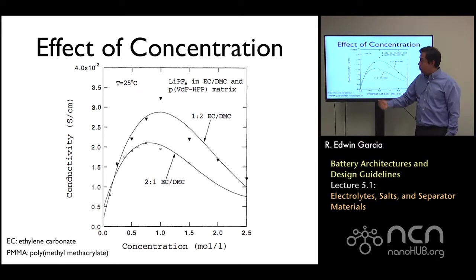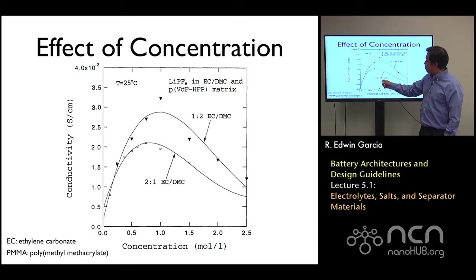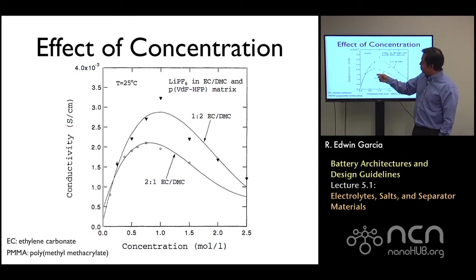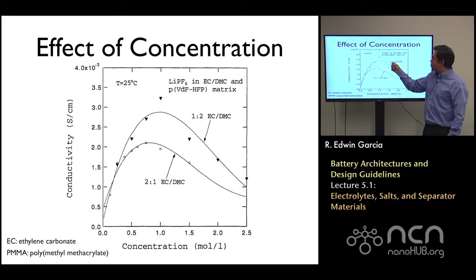Of course, what mixture ratio you use of EC:DMC also becomes important. Because if you have a ratio of 2:1 EC:DMC, your performance will drop by basically a factor of 2 compared to a 1:2 ratio of EC:DMC.